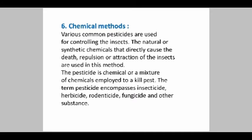Let's talk about the chemical methods. Various common pesticides are used to control the insects. The natural or synthetic chemicals that directly cause the death, repulsion, or attraction of insects are used. A pesticide is the chemical or mixture of chemicals employed for killing pests. The term pesticide encompasses insecticides, herbicides, rodenticides — that means killing rat-like species — fungicides, and other substances.